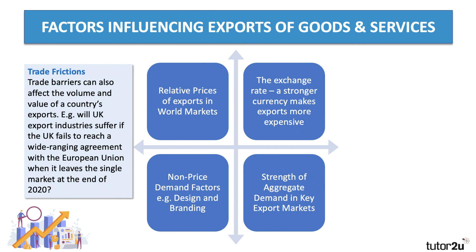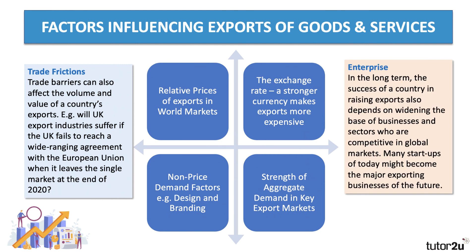Trade frictions can also affect our exports — trade barriers including tariffs and quotas. Thinking about 2021, UK exporters could suffer if the UK doesn't manage to reach a trade agreement with the European Union, which is our biggest single export market. In the long run, the biggest single factor affecting UK exports is whether we have a wide enough base of businesses willing and able to compete in global markets. The startups of today become the big exporting businesses of the future, so investment in enterprise and new businesses is very important for driving long-term export performance.